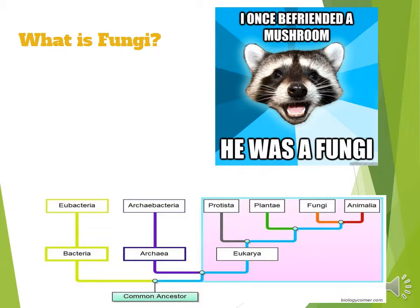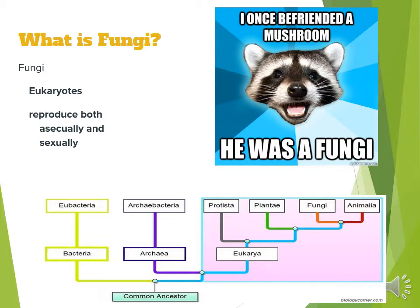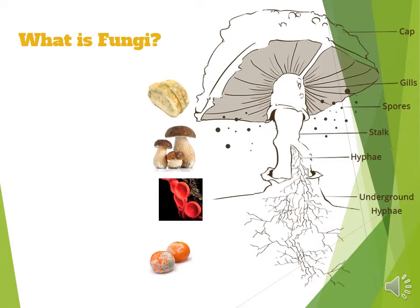Fungi — it's always so fun. Fungi can be eukaryotes. They reproduce both asexually and sexually. The cell wall contains chitin, which is a hard cell wall — a complex carbohydrate. Here's the description and illustration of a fungus: the cap has gills, there are spores in the gills, it has a stalk, and it has hyphae both above ground and underground. Here are some images of fungi — mold on bread, mold on oranges, that type of thing.